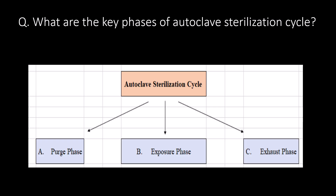What are the key phases of the autoclave sterilization cycle? First, the purge phase; second, the exposure phase; and third, the exhaust phase. These are the key phases of the autoclave sterilization cycle.